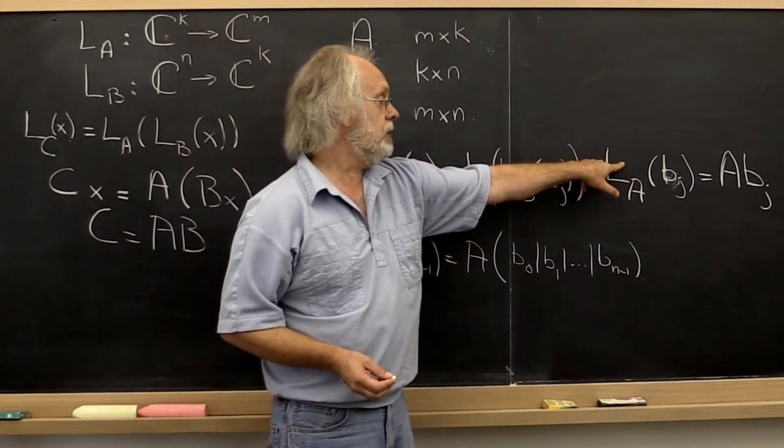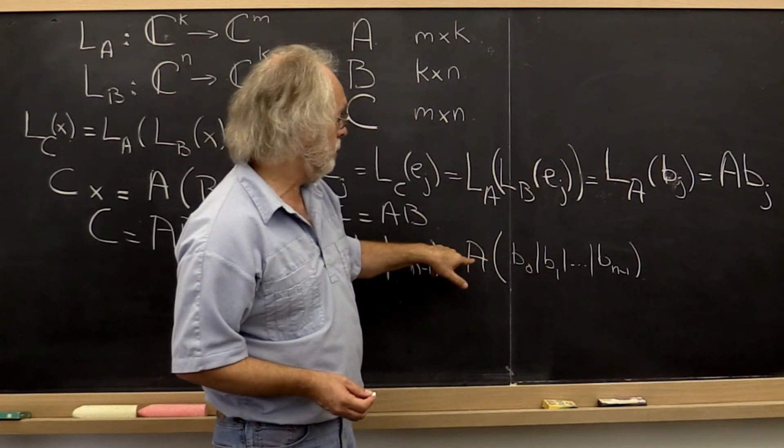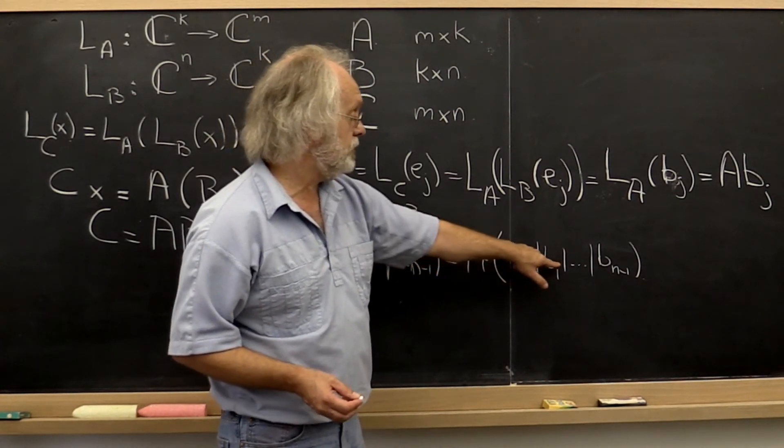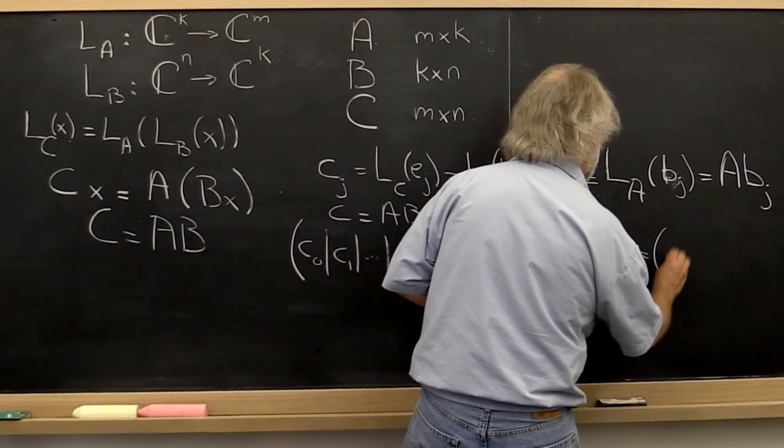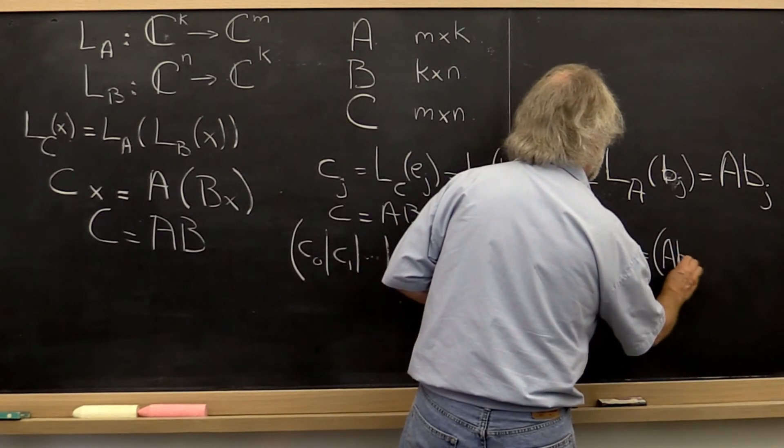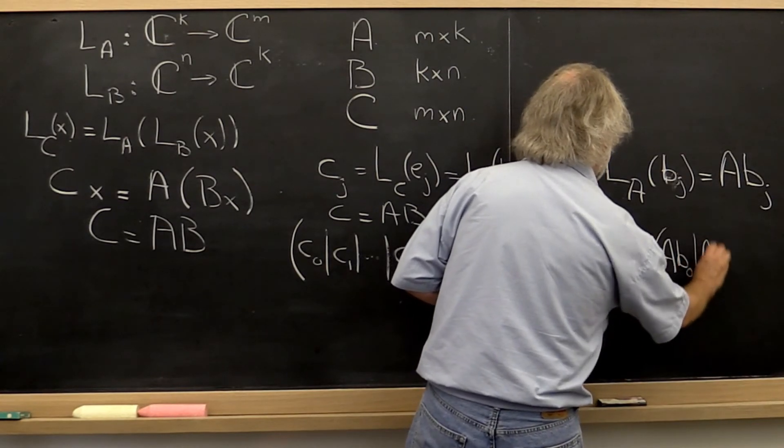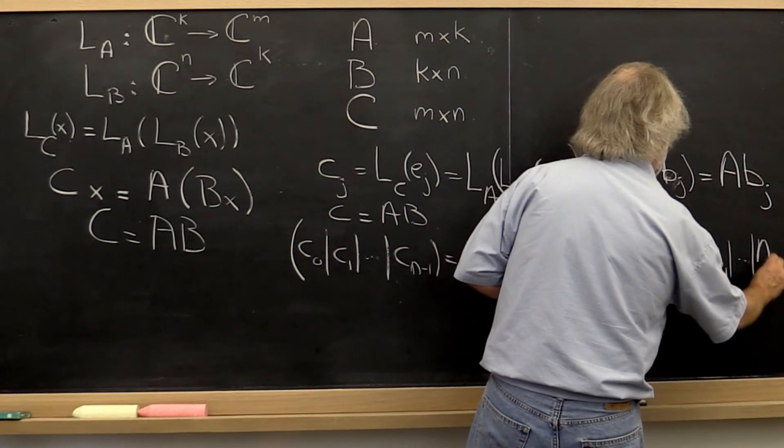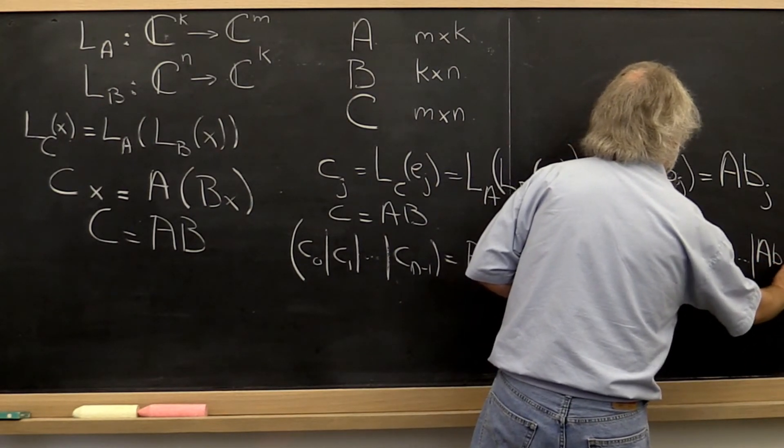And what this now tells us is that the jth column of multiplying A times B is just A times the jth column of B. So this here is just the matrix where the first column is A times B_0, the second column is A times B_1, and the final column is A times B_{n-1}.